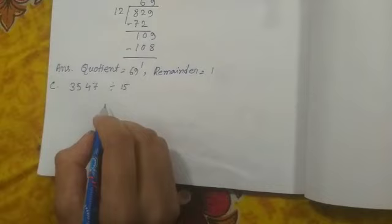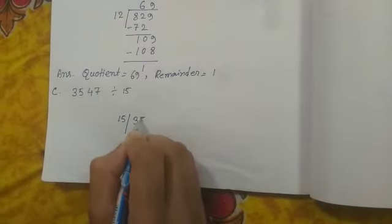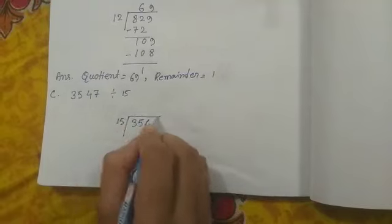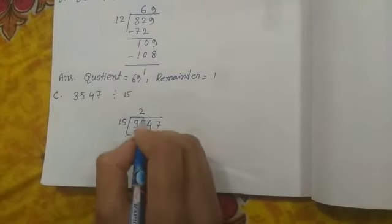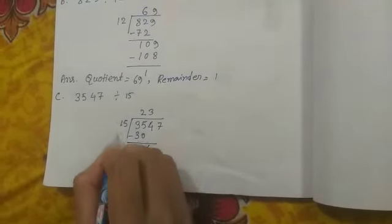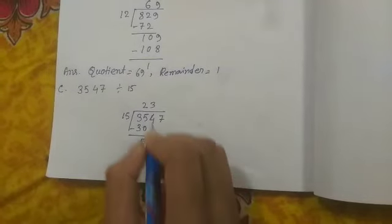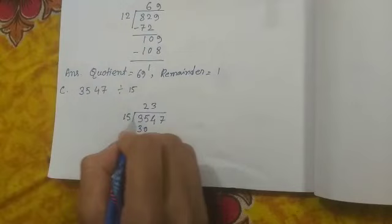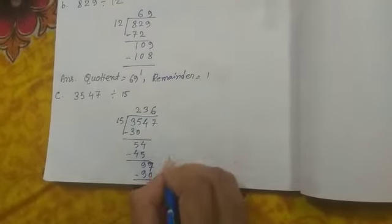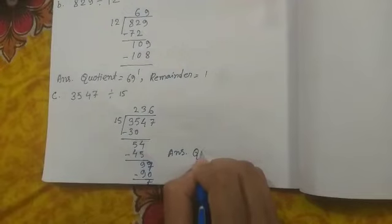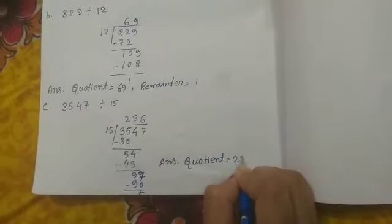Problem C: 3547 divided by 15. Working: 5, 4, 45, 7, 97. Answer: quotient equal to 236, remainder equal to 3.